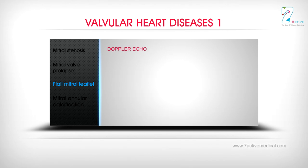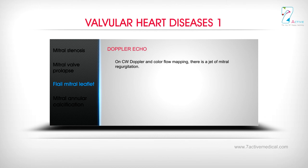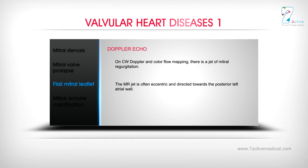Doppler Echo: On CW Doppler and color flow mapping, there is a jet of mitral regurgitation. The MR jet is often eccentric and directed towards the posterior left atrial wall.